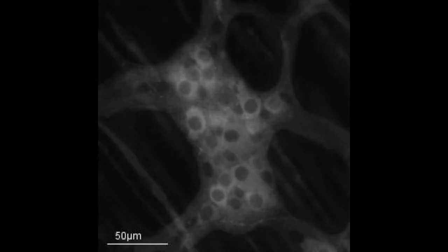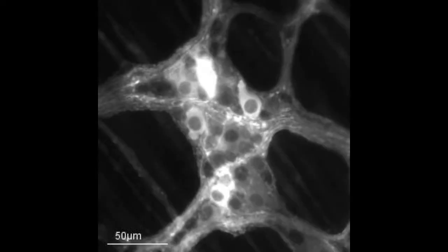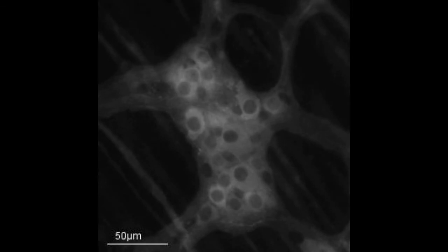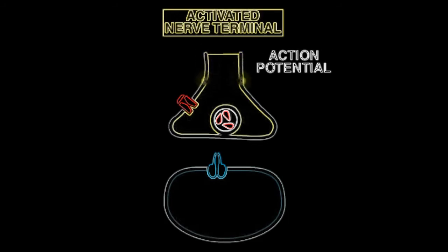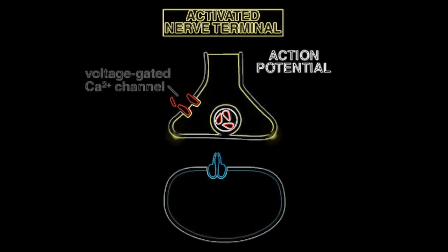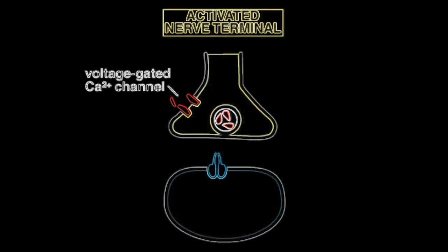The synapse converts the electrical signal of the action potential in the presynaptic cell into a chemical signal. When an action potential reaches a nerve terminal, it opens voltage-gated calcium channels in the plasma membrane, allowing calcium ions to flow into the terminal.